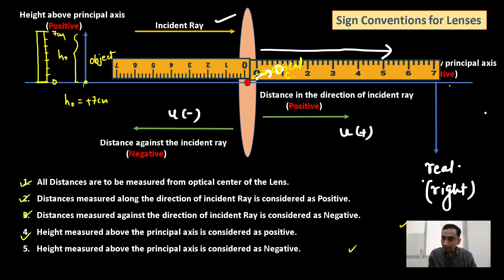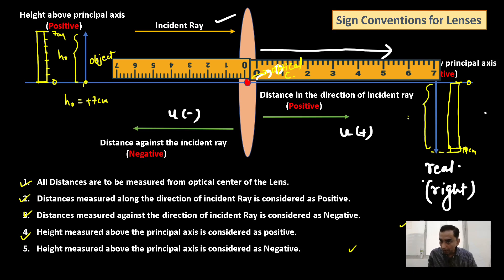In the case of a real image, I place the scale at the optical center. The height of the image is measured below the principal axis — suppose it is 10 centimeters — so I will write down minus 10 centimeters in the numericals, as it is measured below the principal axis and is therefore negative.